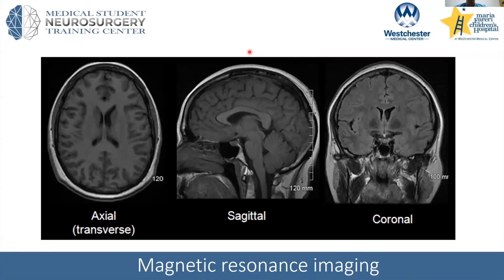Another question: what tests can diagnose shunt failure if ventricles appear non-dilated on CT? There's no single great test — no blood test that says 'shunt working' or 'not working.' A lot of it is gestalt. First and foremost, the patient's parents can often tell you — 'my son clearly has headaches, vomiting, and funny eye movements, exactly the same as when the shunt was placed.' That's pretty convincing.